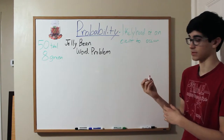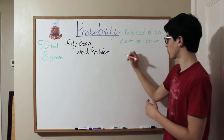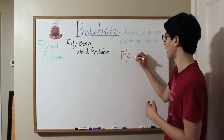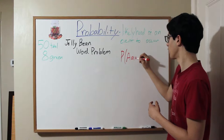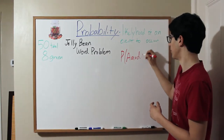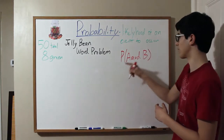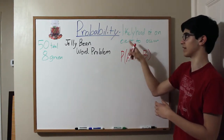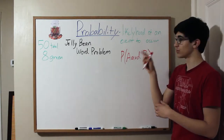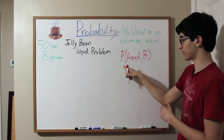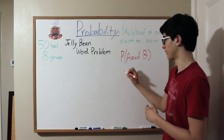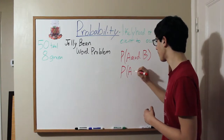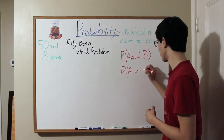We're going to be talking about P of A and B, where that means the probability of A and B happening, where A and B are events, because probability is the likelihood of an event to occur. So we're going to be talking about the difference between the probability of A and B, and the probability of A or B.